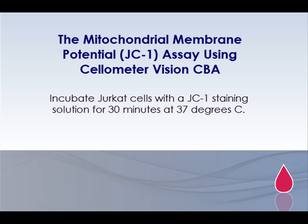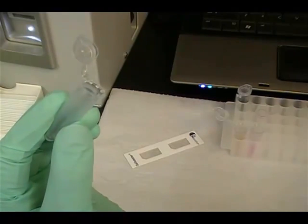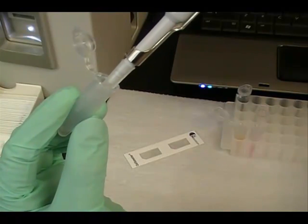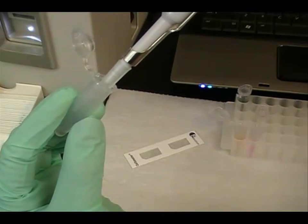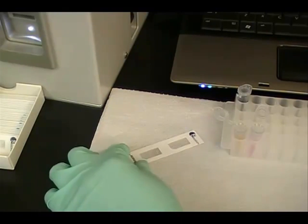To run this experiment, Jurkat cells were incubated with a JC-1 staining solution for 30 minutes at 37 degrees Celsius. Following incubation, 20 microliters of sample was pipetted into the Cellometer counting chamber. The chamber was inserted into the Vision CBA instrument.